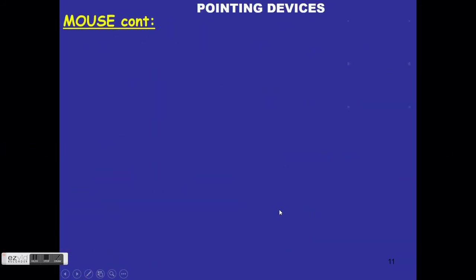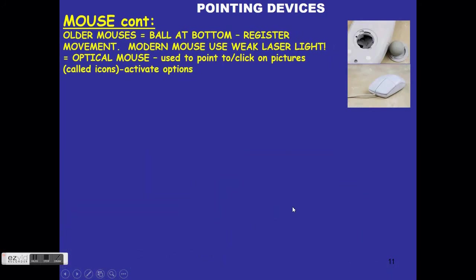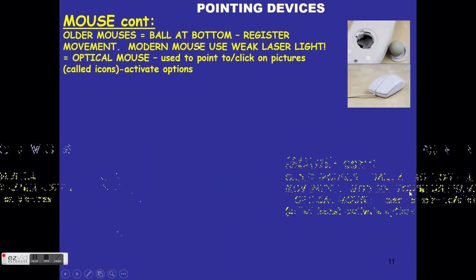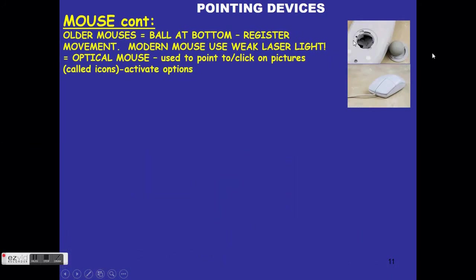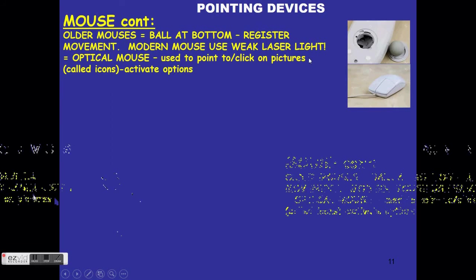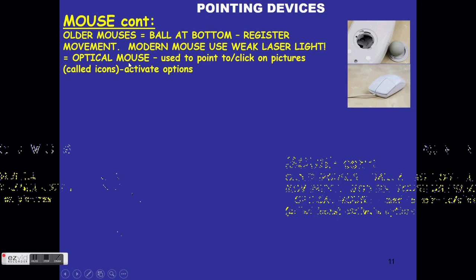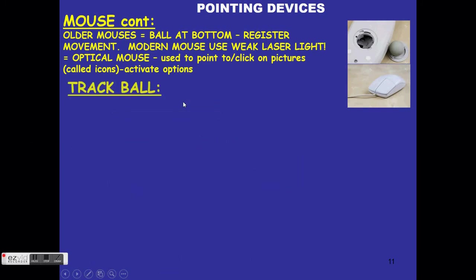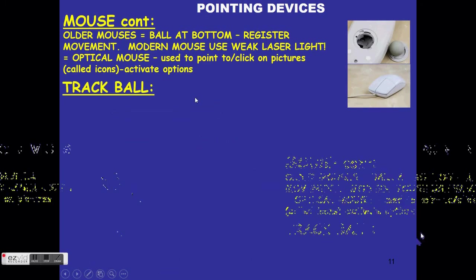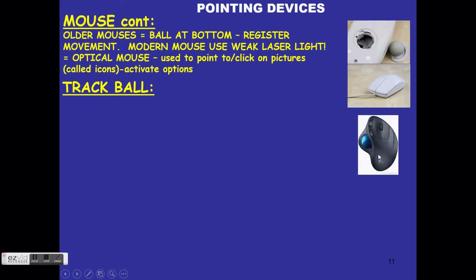We have an optical mouse and wireless mice — the wireless one connects using a USB interface. The older type of mouse had a ball at the bottom, as you can see from the disassembled image. Newer ones use a weak laser light, which is why it is called an optical mouse. It is also used to click and point.